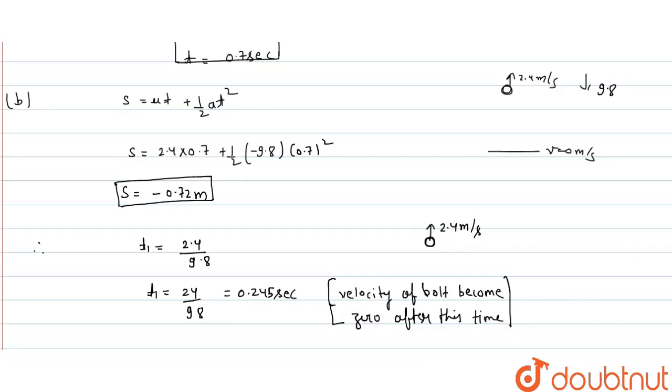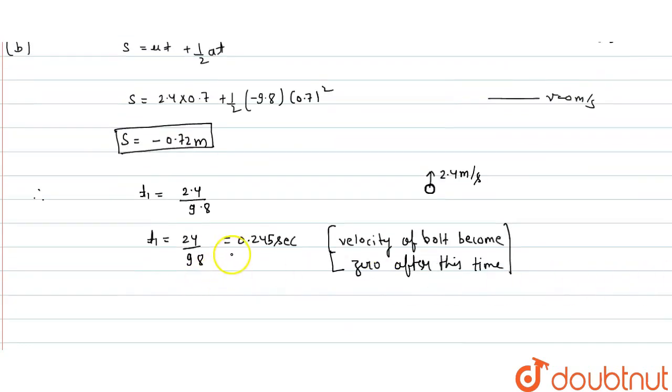After this time, velocity will become 0. It means at time 0.245 seconds when velocity is 0, it will maximize like a projectile. Total distance will go above plus distance below. This time for distance motion, total distance traveled...